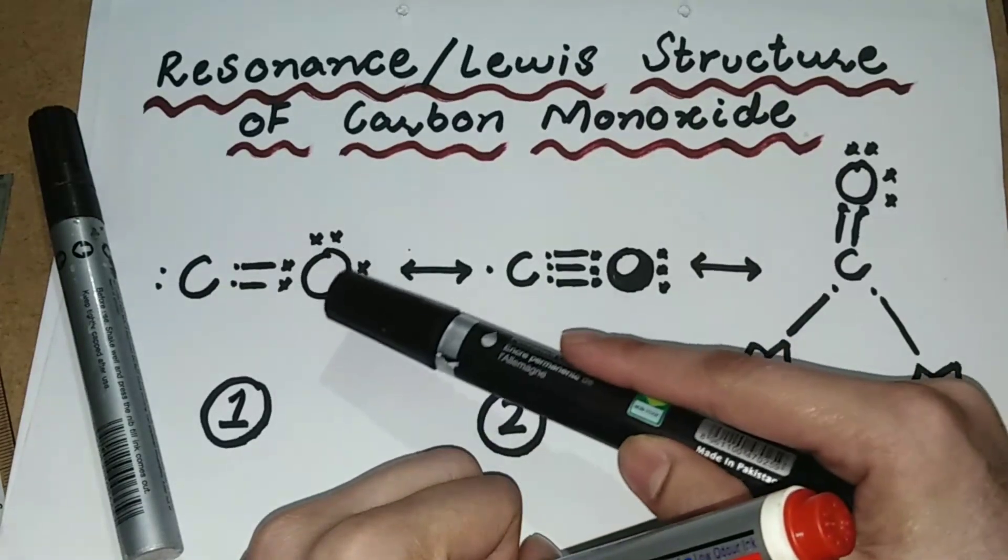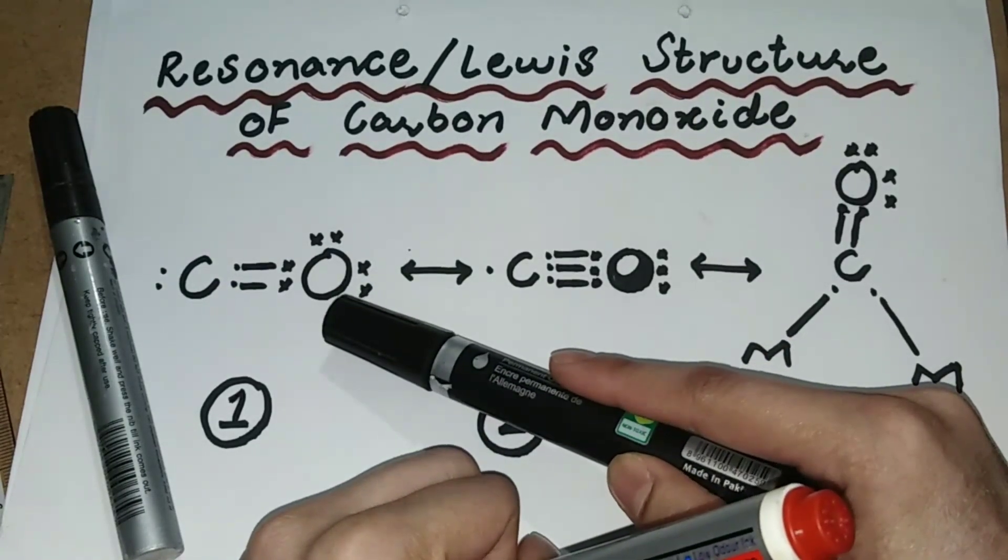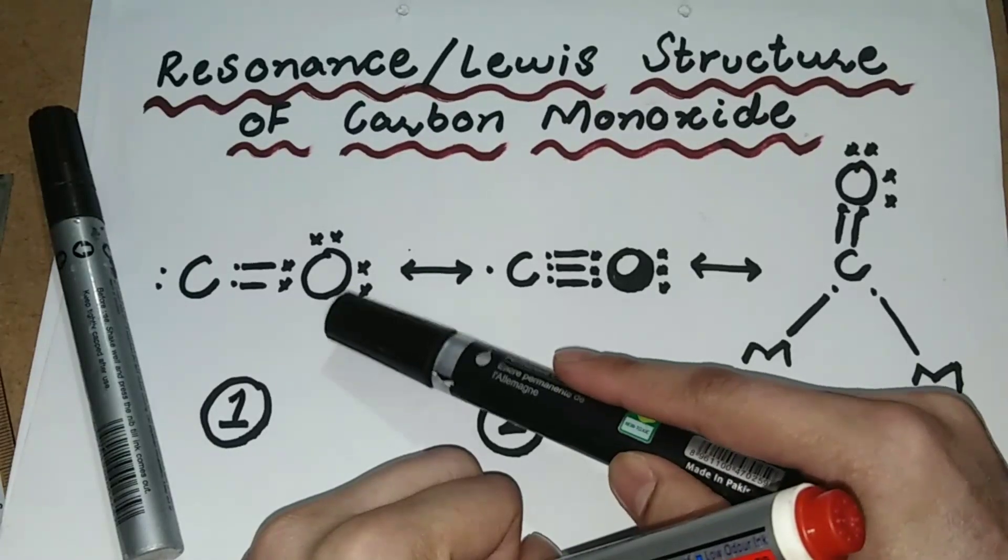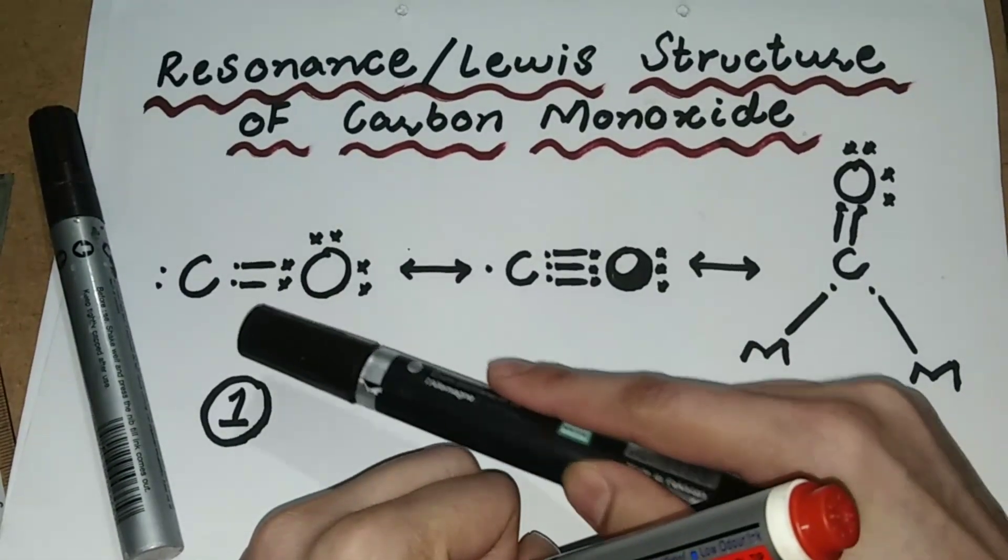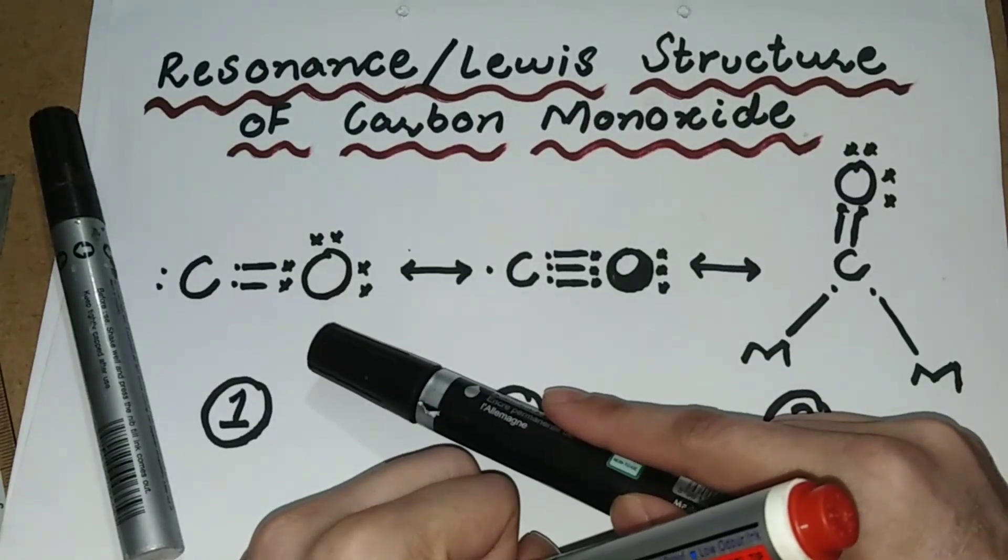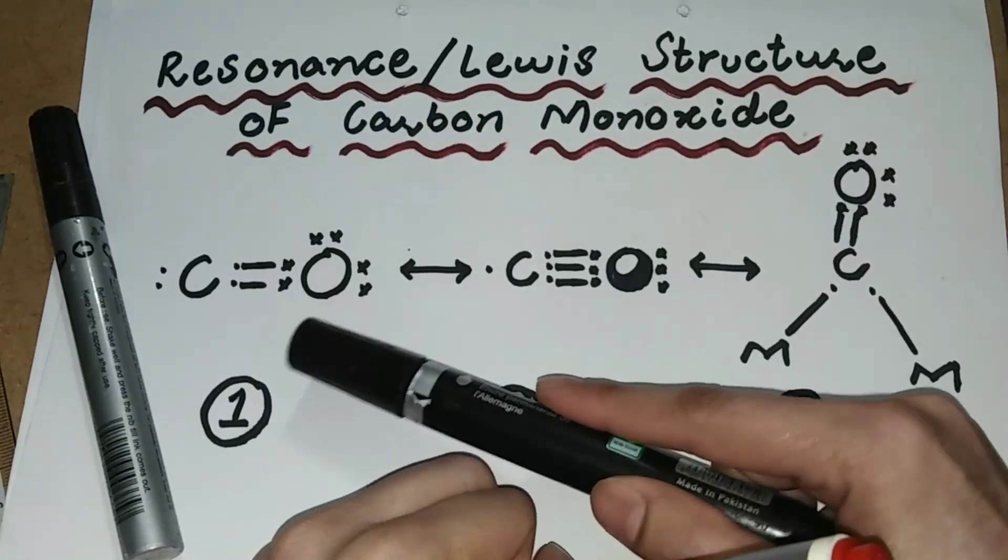Oxygen belongs to the sixth group of the periodic table and has six electrons in the outermost shell. By sharing two electrons each, carbon and oxygen form one double bond between them in the first resonance structure.